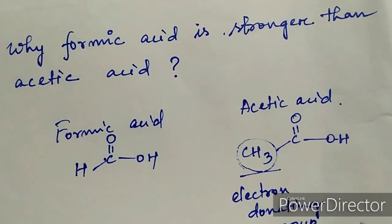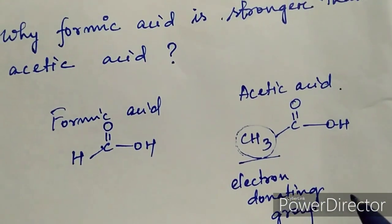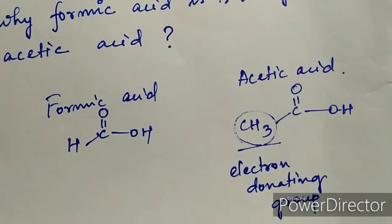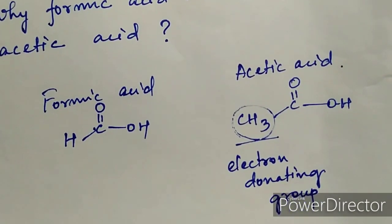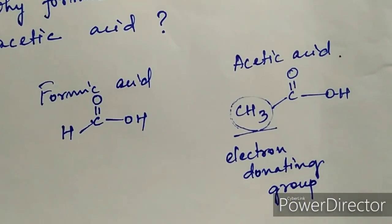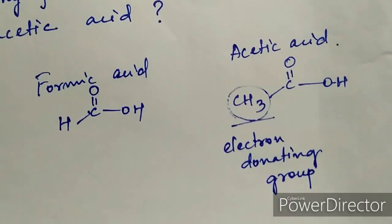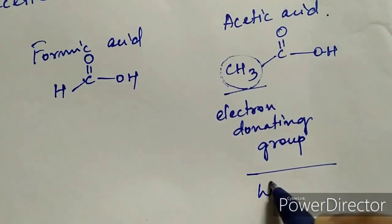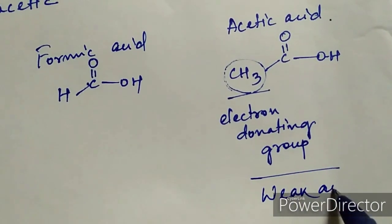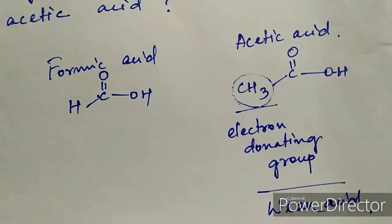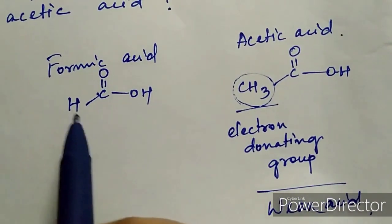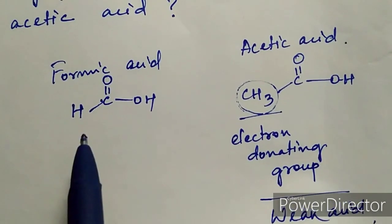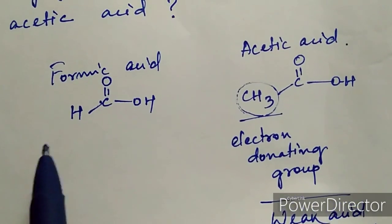If the electron density increases, it becomes harder to remove the H from the O-H bond. If it is harder to remove the H, then less H+ is present in the solution, which means acetic acid is a weak acid.